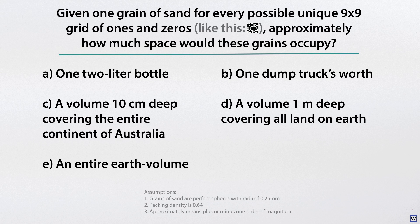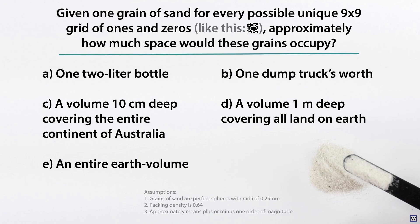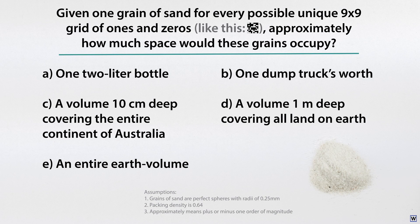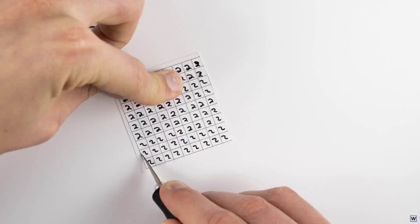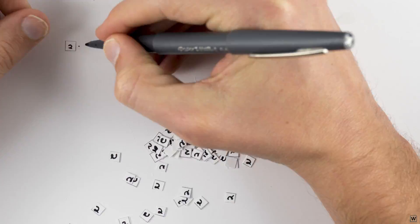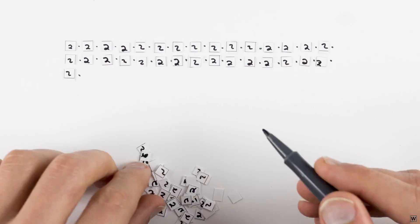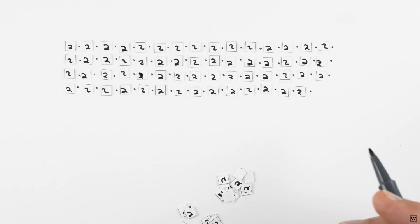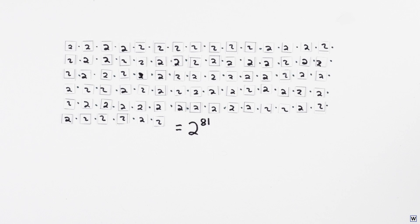Last time we left off trying to figure out how many possible rules our first machine learning approach allowed. That is, how many possible 9x9 grids of ones and zeros exist. Since every possible example could be a rule, and since there are two options for each value in our 9x9 grids, that means we have a staggering 2x2x2x2 81 times, or 2 to the 81st power rules.